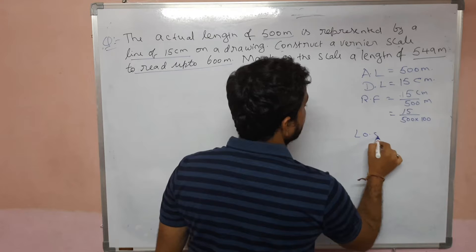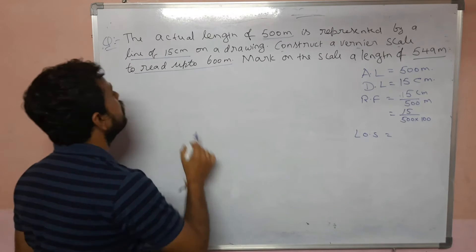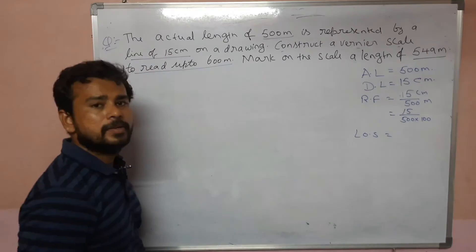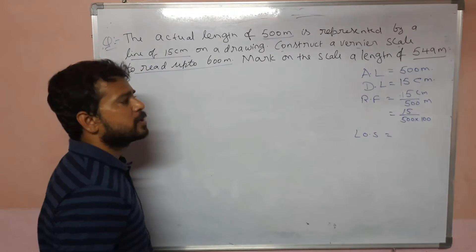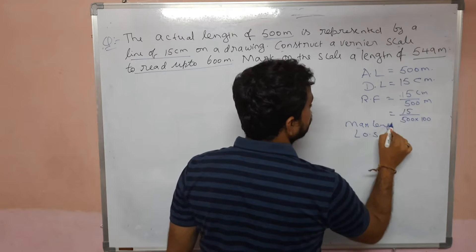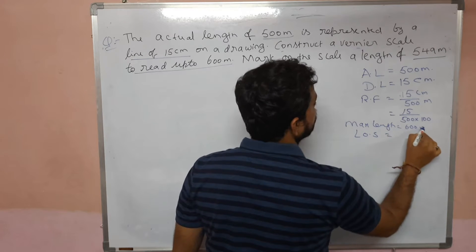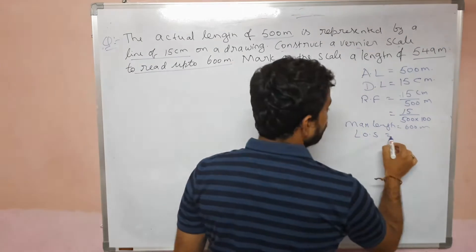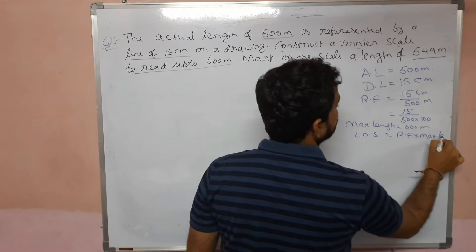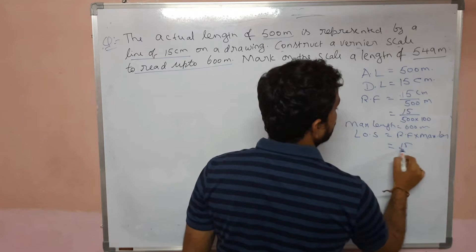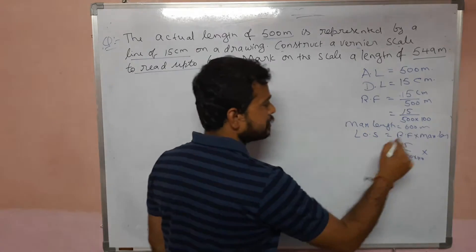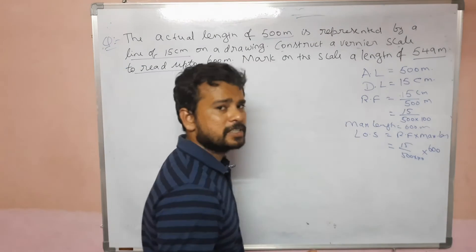Next step: length of scale. Construct Vernier Scale to read up to 600 meters — 600 meters means maximum length. So maximum length equals 600 meters. Length of scale is equal to representative factor multiplied by maximum length: 15 divided by 500 multiplied by 100, into maximum length 600 meters.